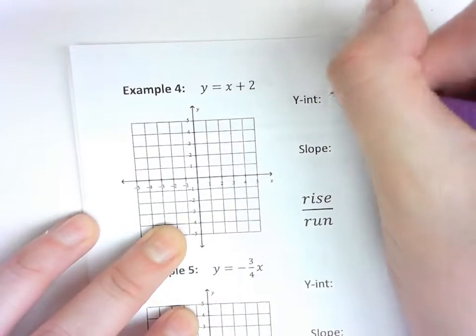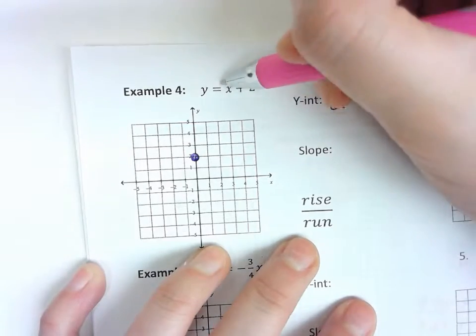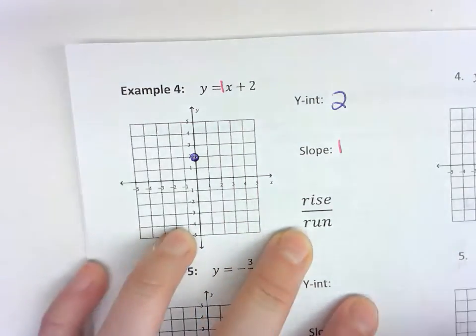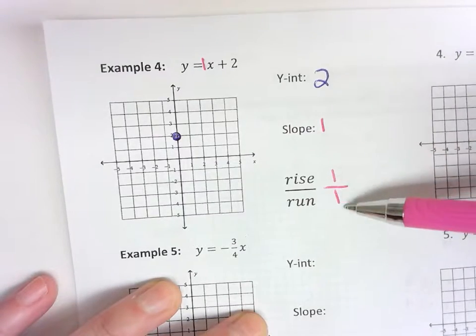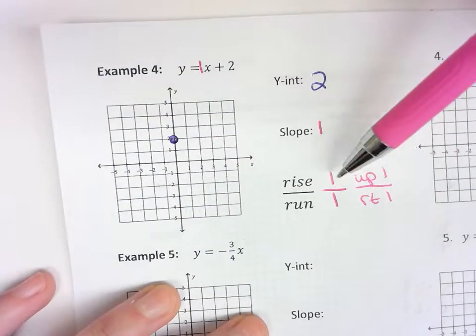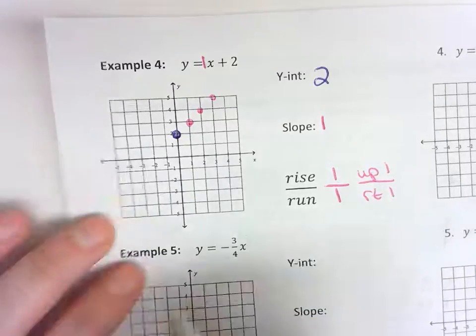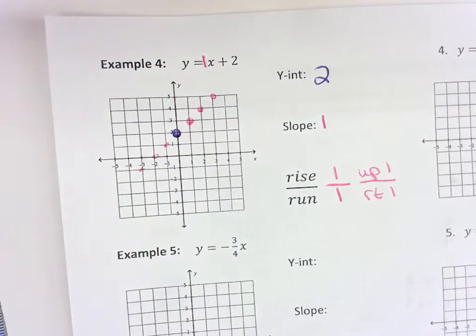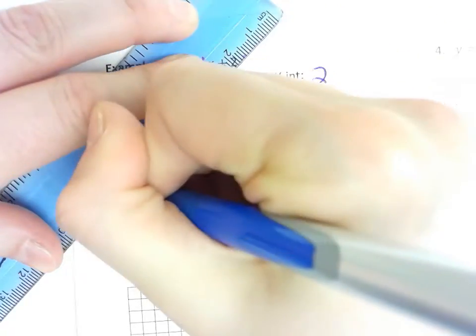For example number 4, the y-intercept is positive 2 — the number all by itself. But this time there is not a number in front of the x. Any time there's not a number, there's an imaginary 1, so our slope is 1. It's not a fraction, so divide it by 1 — 1 divided by 1 is still 1. Now we go up 1 and over to the right 1. It's positive, that's how we know we're going up, and we always start by going over to the right. To go the other direction, go down 1 and left 1. Once you've got all your points, connect them with your ruler all the way through the graph. Arrows on both ends.